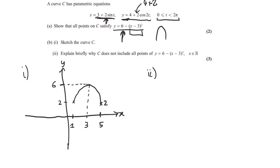Answering part B: why does it not include all the points? Because t ranges from 0 to 2 pi, x is only going to be between 1 and 5. So it's not the whole curve — that's basically the explanation. You could put a few more words around it, but that's all there is to it.